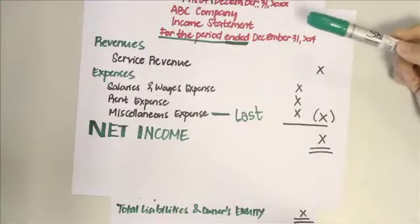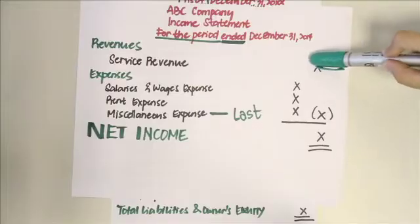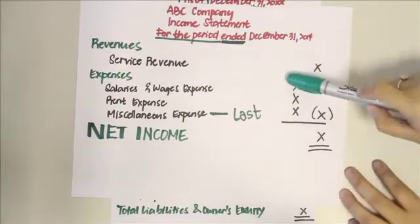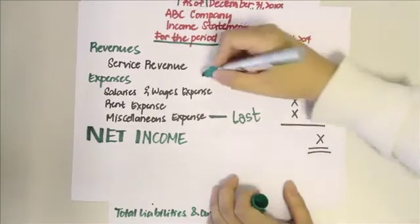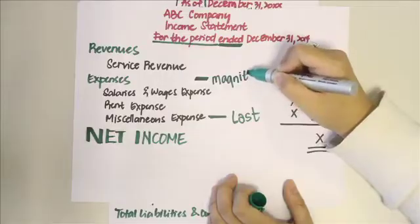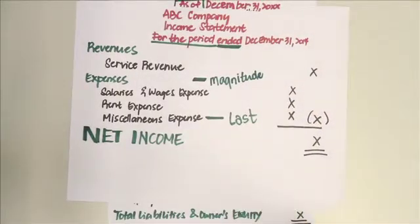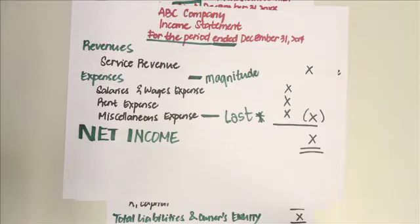This is the natural form of the income statement, which is used for service businesses. You group all revenues together, then group all expenses together, and deduct to get net income. Remember that expenses are always arranged according to magnitude — largest amounts listed first down to smallest — but miscellaneous expense, regardless of the amount, is always presented last.